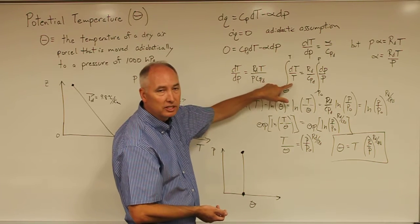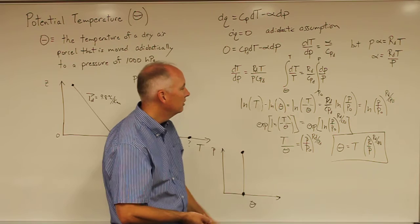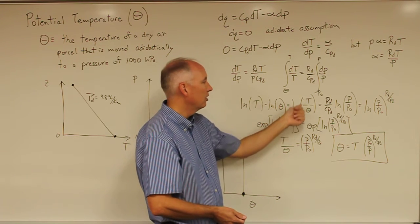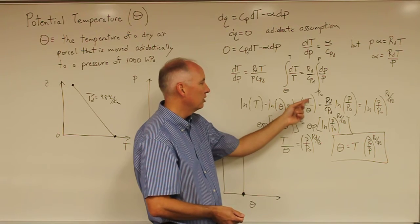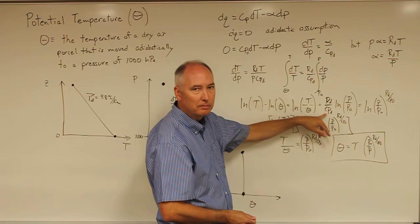So the integral of DT over T is the natural log of T minus the natural log of theta. We learned that the log of A minus the log of B is equal to the log of A over B. So that's the natural log of T over theta.